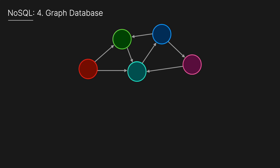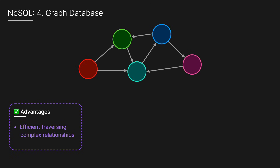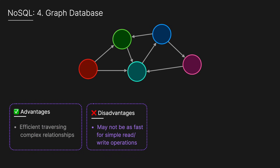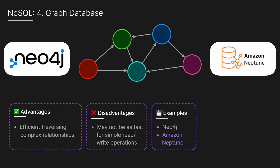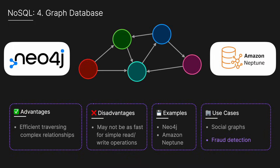Finally, the last major group of NoSQL databases are graph databases, which represent data as nodes and edges, making relationships first-class citizens. The advantages include efficient traversal of complex relationships, making them great for recommendation engines or social networks. The disadvantages include that they may not be as fast for simple read/write operations on large data sets. Examples include Neo4j and Amazon Neptune, and they're ideal for social graphs, fraud detection, and network analysis.